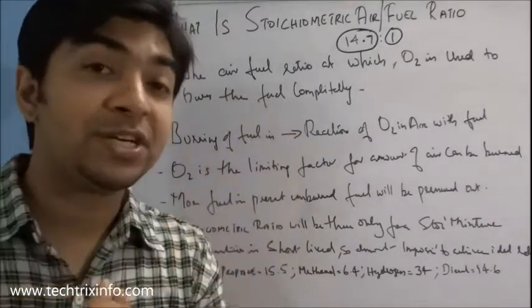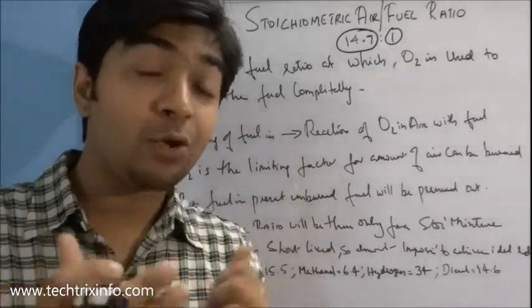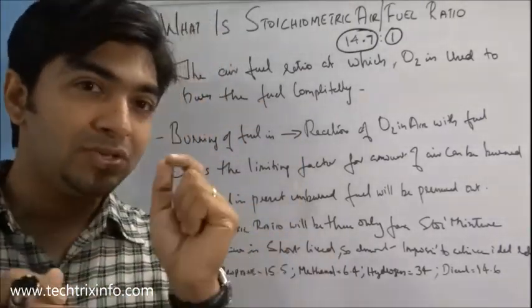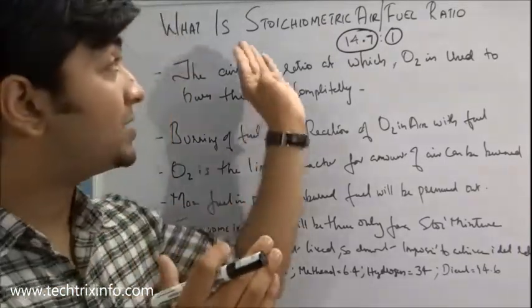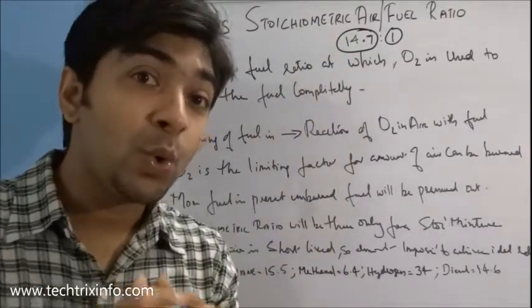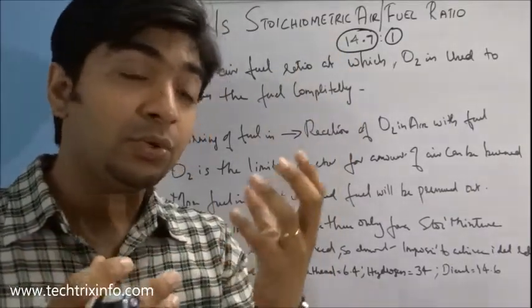So that fuel which is not burned will just be pushed out through the exhaust. That will reduce the efficiency and the mileage and the economy of the engine. So to keep the economy intact, to keep the mileage intact, we need to achieve a stoichiometric air fuel ratio.